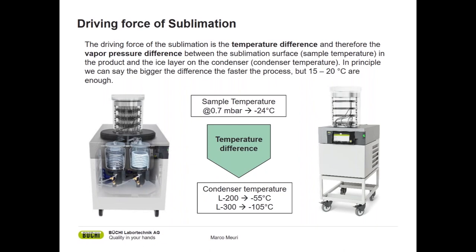The vapor formed moves down to the condenser where it is collected. We need a temperature difference between the sample and the condenser temperature; this creates a suction and the vapor moves downward to be condensed again. In the L200, we have a condenser temperature of minus 55 degrees. In the L300, we have a condenser temperature of minus 105 degrees. What we need for proper freeze drying is a difference between those two temperatures of 15 to 20 degrees.